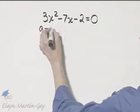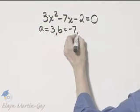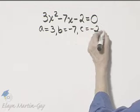A is 3, B is negative 7, and C is negative 2.